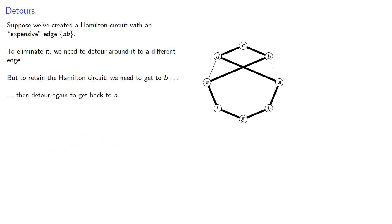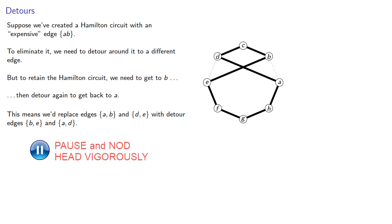This means we'd replace edges AB and DE with detour edges BE and AD. This would be worth doing if the weight of the old edges is greater than the weight of the new edges.